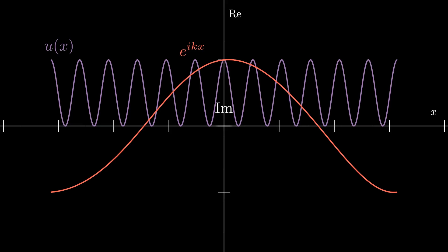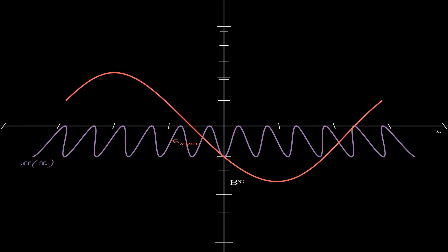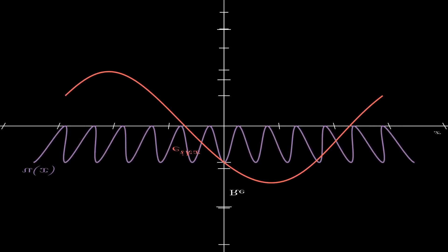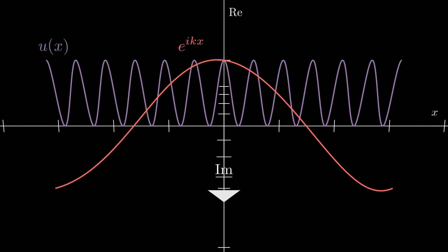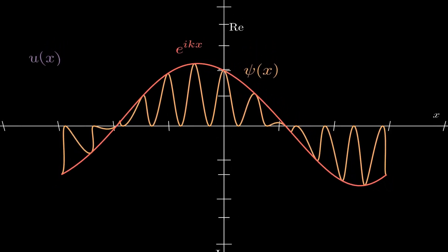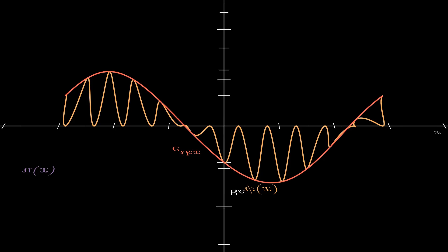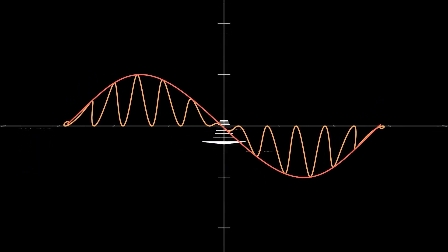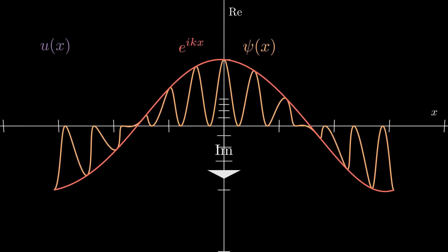You can see I've drawn out our unit cell function along with e to the i k x. You can think of e to the i k x as an envelope function to which u of x will conform. And you can see now that it's sort of like a helix where our unit cell function has been wrapped into the plane of e to the i k x.